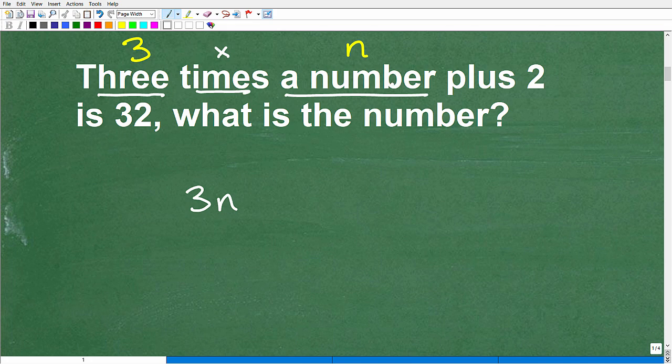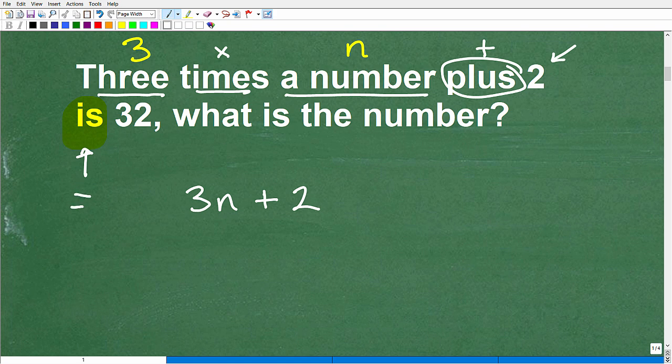Let's continue on. Three times a number plus, that's pretty easy, that's this operator, plus what? Two. Now, this word here is going to always be equivalent to the equal symbol. So we have three times a number plus two. That right there is equal to what? Thirty-two. So now the question is, what is the number? And remember, the number we're talking about is n. So I want to know what n is equal to.